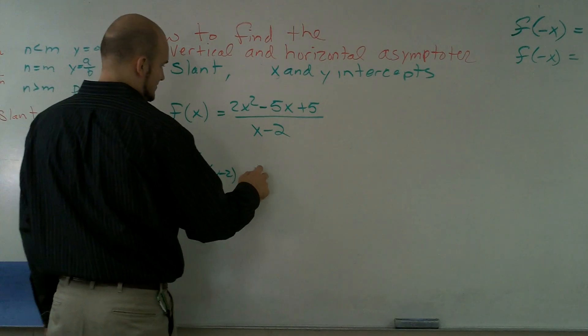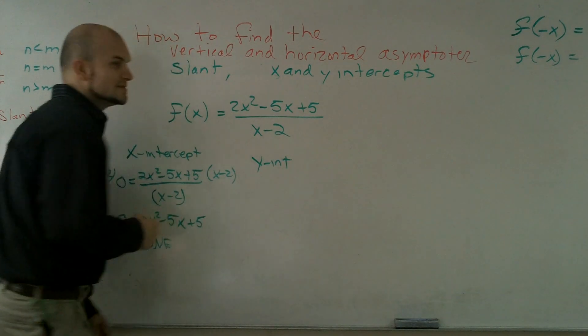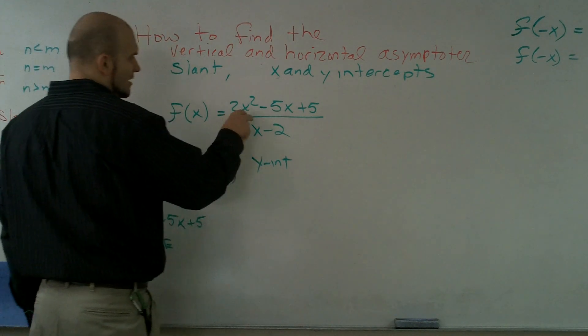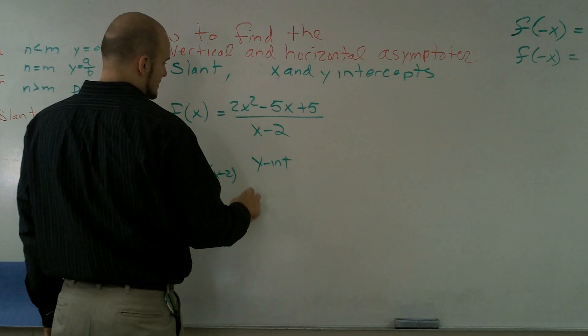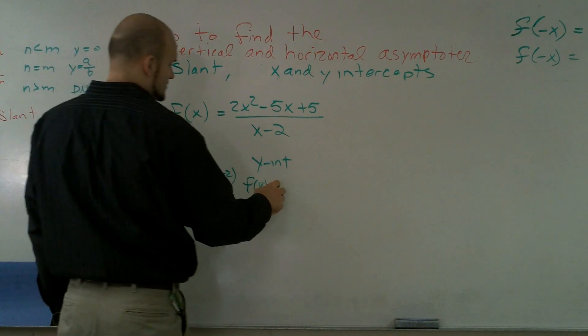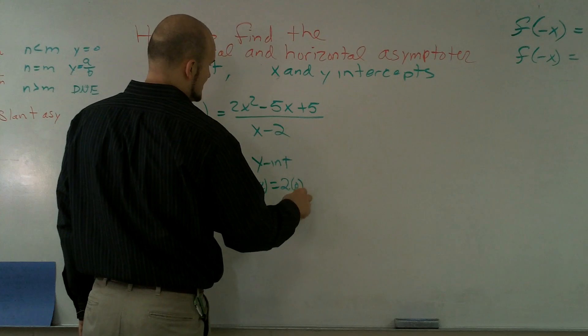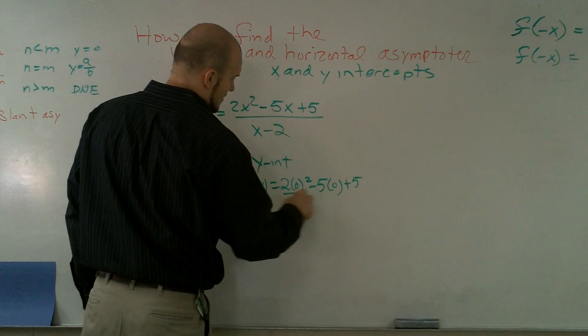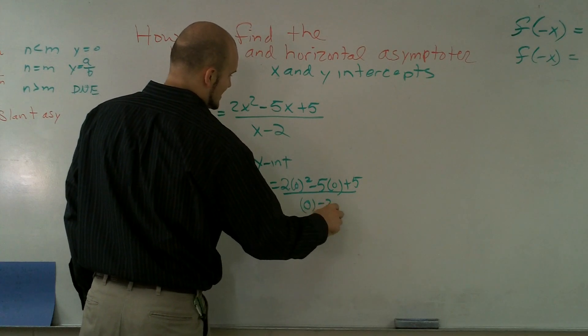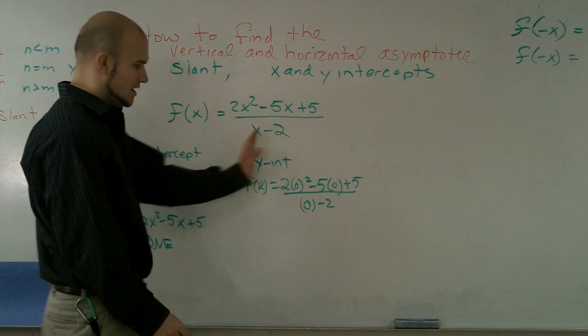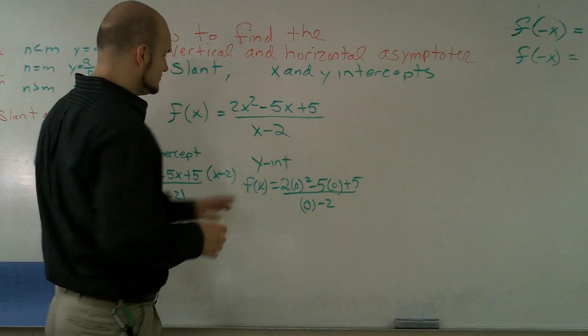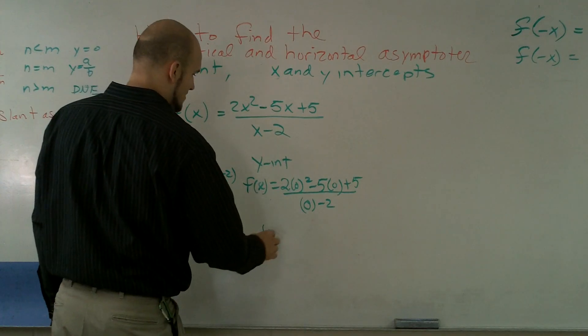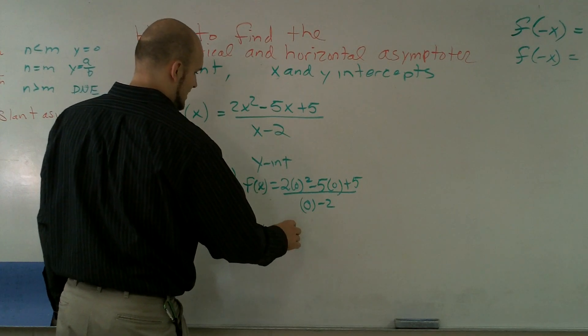Let's check out the y intercept. Y intercept is when it crosses the y axis, we know that x equals 0. So now f of x is when x equals 0. So it's going to equal 2 times 0 squared minus 5 times 0 plus 5 all over 0 minus 2. And I end up getting that my y intercept is when y equals negative 5 halves.